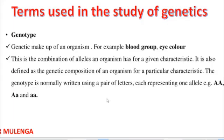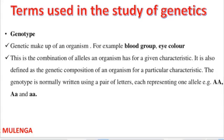The genotype is normally written using a pair of letters, and each of these letters represents an allele. For example, capital AA, or capital A with a small a, or small aa — these are allele pairs representing the genotype, which is the genetic composition of an organism.